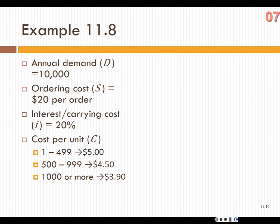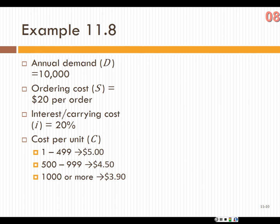Let's walk through example 11-8 from the textbook. Annual demand D = 10,000 units. Setup or ordering costs = $20 per order. The interest or carrying cost rate is 20%. Cost per unit varies by quantity: $5.00 per unit for 1–499 units, $4.75 for 500–999 units, and $3.90 for 1,000 or more units.